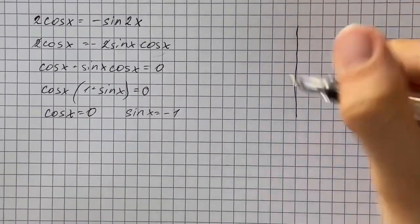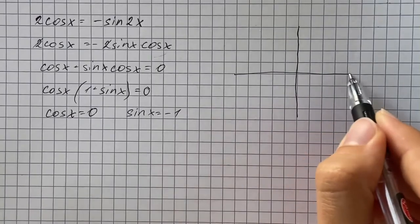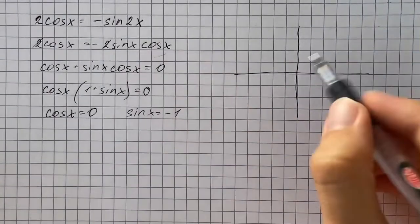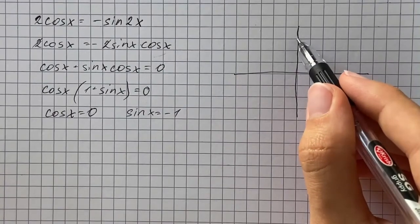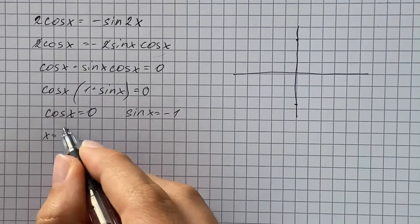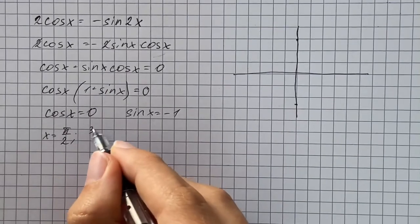So we're going to use the unit circle, and cosine corresponds to x-coordinate. So cosine of x equals 0 when x equals pi over 2 or 3 pi over 2. So that's going to be our first two solutions.